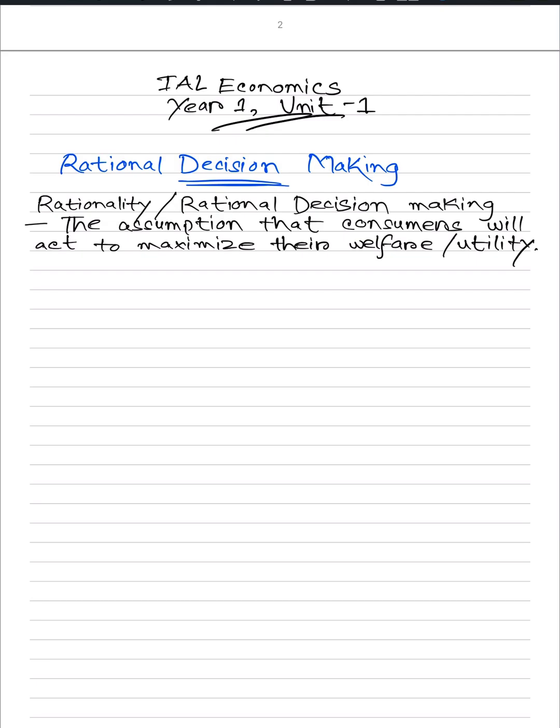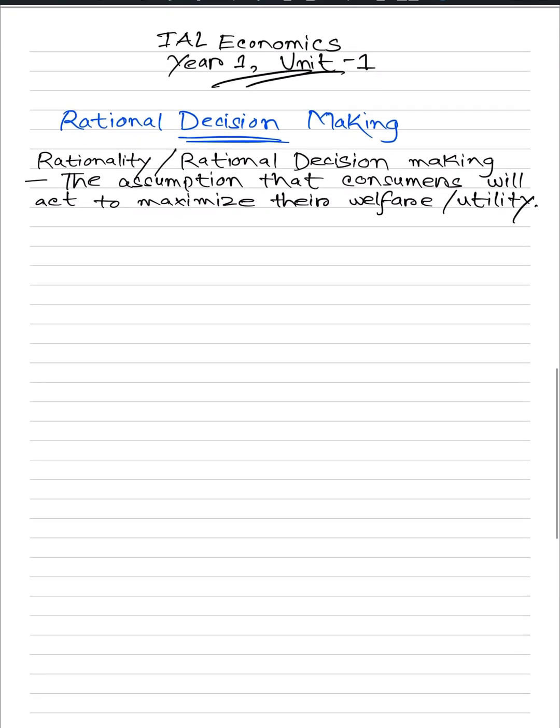So for starters, let's quickly review what it is. Rational decision making, or rationality of a consumer, refers to the assumption that consumers will act to maximize their welfare or their utility. We assume that consumers will do whatever is necessary to maximize their own social welfare or social benefit.